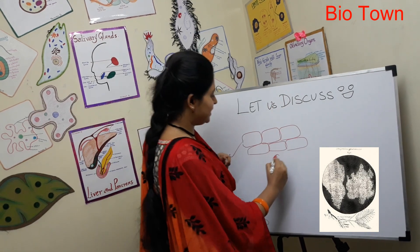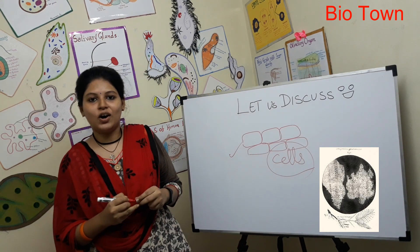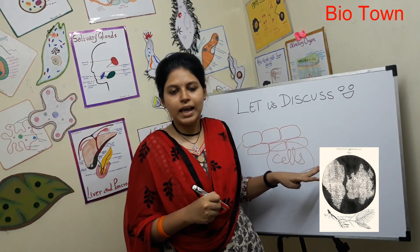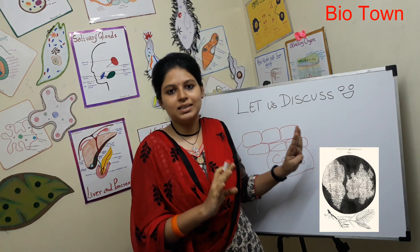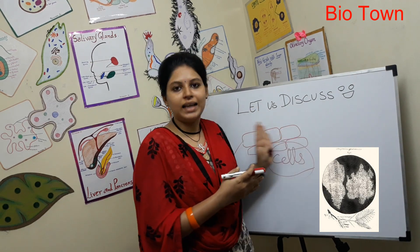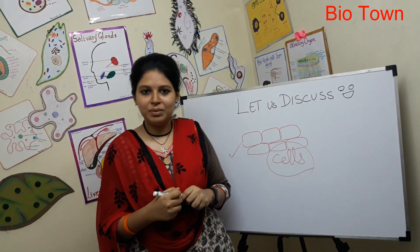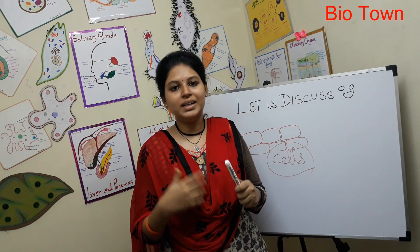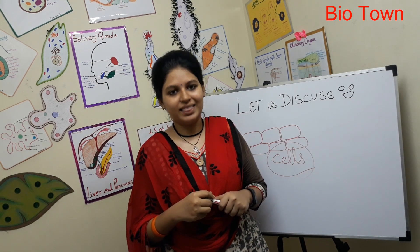He drew what he saw and noticed these rectangular boxes looked empty, like empty rooms — similar to where monks live, and somewhat like a prison. That's why he named them 'cells,' since 'cell' was another word for a prison room. The closely placed box-like rooms reminded him of cells, and that's how the discovery of cells came about.